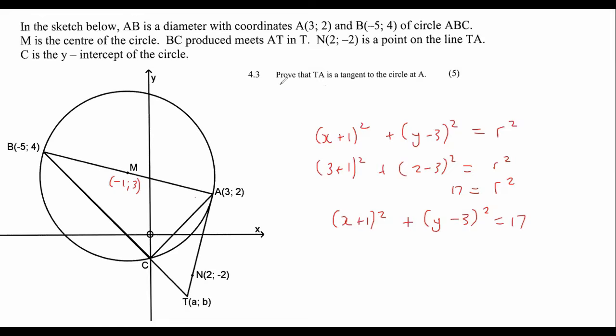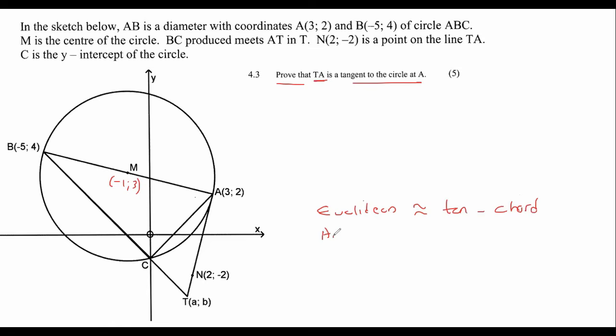Question 4.3 says prove that TA is a tangent to the circle at A. So listen carefully. When they ask this question in Euclidean geometry, you would usually use the Tan-Chord theorem. If we are in analytical geometry, we don't really look at the angles too much. Then how would you prove something is a tangent? You need to remember that if you have a circle and a tangent, then if you look at the radius of the circle, it always makes a 90 degree angle with the tangent.